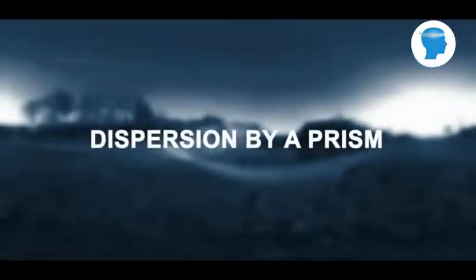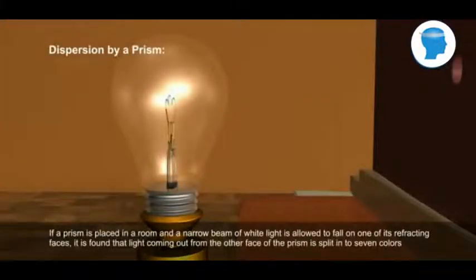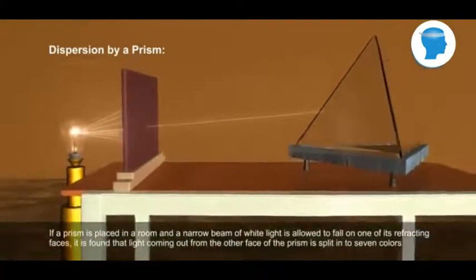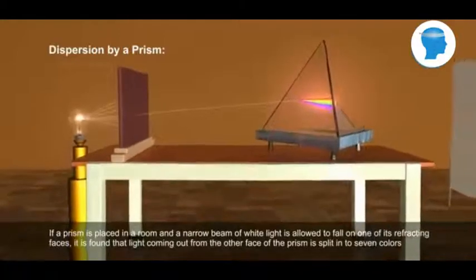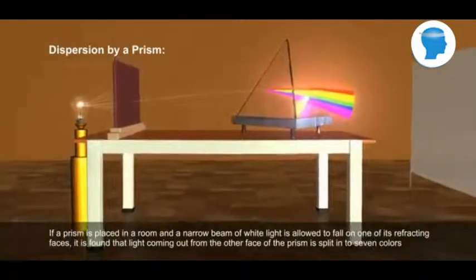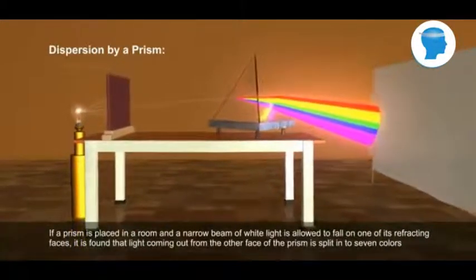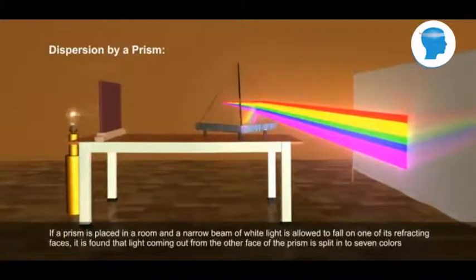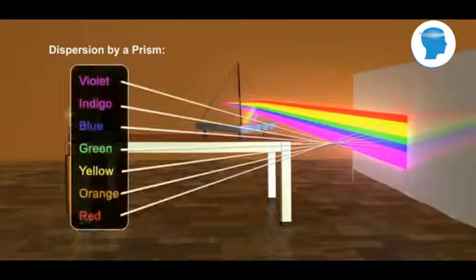Dispersion by a Prism. If a prism is placed in a room and a narrow beam of white light is allowed to fall on one of its refracting faces, it is found that light coming out from the other face of the prism is split into seven colours.